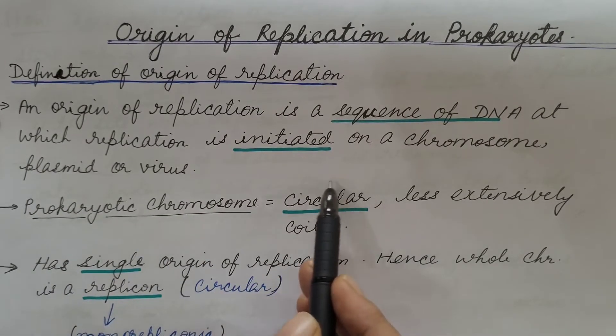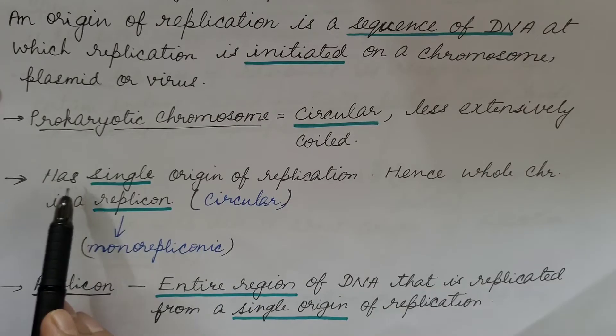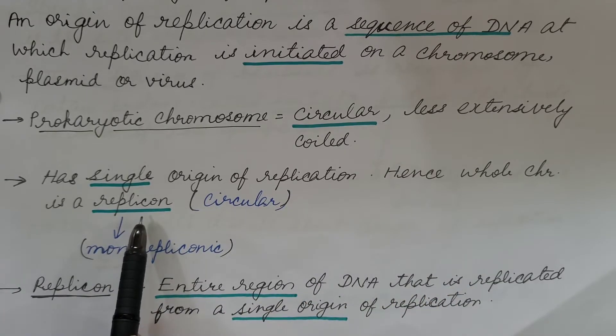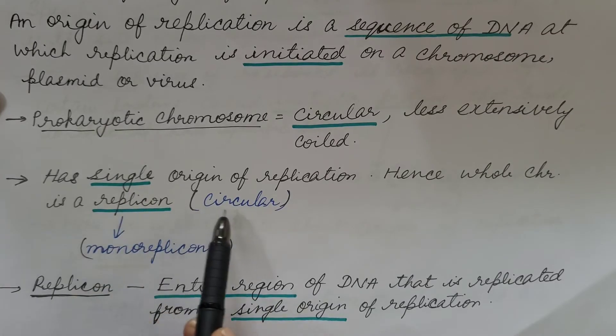Prokaryotic chromosome is circular, less extensively coiled. It has single origin of replication, hence whole chromosome is a replicon. That is mono-repliconic and replicon is circular.